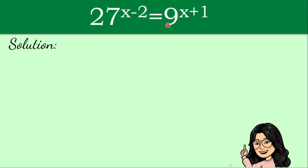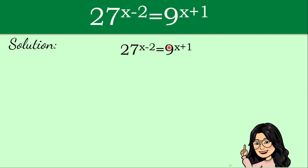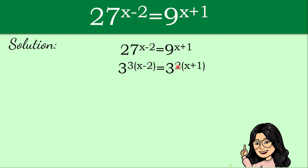We have 27 raised to the power of x minus 2 is equal to 9 raised to the power of x plus 1. We need to write both sides with the same base. Both 27 and 9 can be expressed with a base of 3, since 27 is 3 times 3 times 3, and 9 is 3 times 3. So we rewrite it: 3 cubed for 27 and 3 squared for 9.